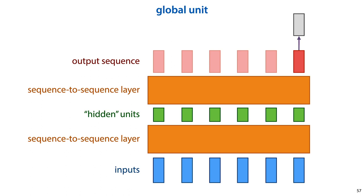For some layers, like the recurrent ones we'll see in the next video, this kind of approach puts more weight on the end of the sequence, since the early nodes have to propagate through more intermediate steps in the sequence-to-sequence layer. For others, all inputs in the sequence are treated equally, and there is little difference between using a global unit or a pooling layer.